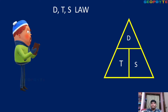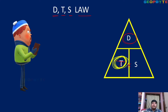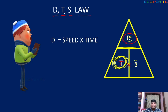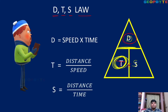First concept: DTS law — Distance, Time, Speed law. Suppose if you want distance, close the distance: distance equals time into speed. Suppose if you want time, close the time: time equals distance divided by speed. And speed equals distance divided by time. Depends upon your requirement. Distance means speed into time. Time means distance by speed.